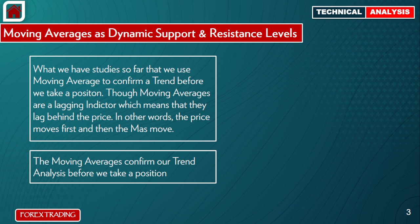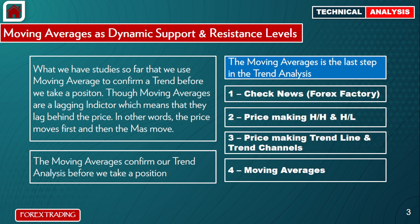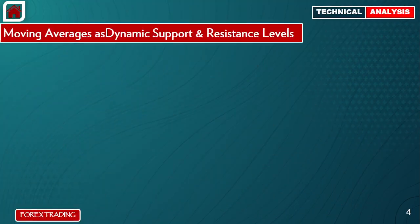Moving averages confirm our trend analysis before we take a position. The steps for trend analysis are: first, check the news on Forex Factory; second, check if the price is making higher highs or higher lows in an uptrend, and the same for a downtrend; third, check if the price is forming trend lines or trend channels. If these three are in place, the fourth step is to confirm your analysis with the moving average.